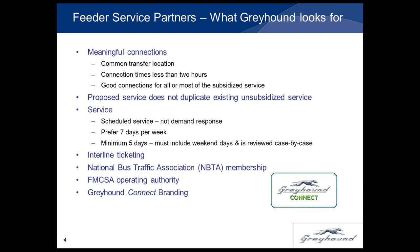What does Greyhound look for in partners? The most important thing is a meaningful connection. A common transfer location means passengers must be able to reasonably walk from service to service and have a safe, comfortable place to wait for a transfer — no drop-offs on street corners in front of closed locations in sub-zero weather. We're also looking at connections of less than two hours, and we go through a formalized process to make sure that the interline relationship is formal and correct schedule information gets into the Greyhound ticketing system.